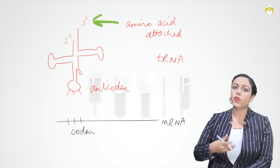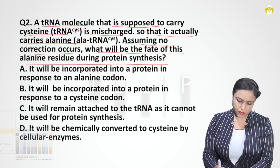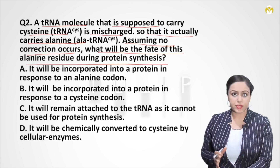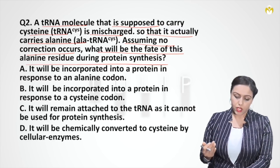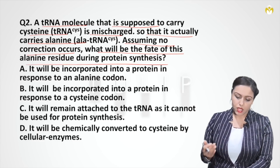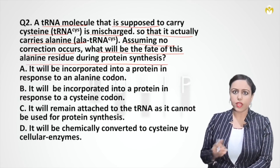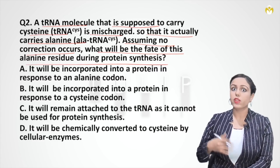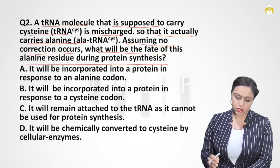The codon can see only the anticodon, it cannot see which amino acid is attached. So the wrong amino acid will be added. To bring the correct amino acid is the work of aminoacyl-tRNA synthetase. If tRNA is bringing a wrong amino acid, that wrong amino acid will be added. In the question, the anti-codon is for cysteine but the tRNA carries alanine, and they say no correction by aminoacyl-tRNA synthetase is occurring.